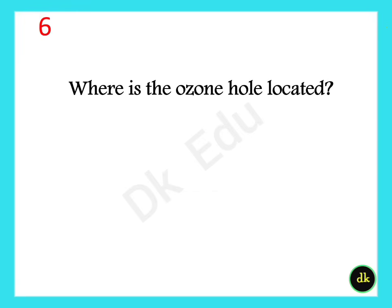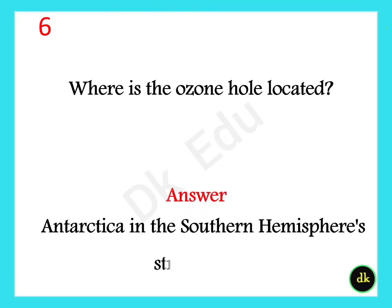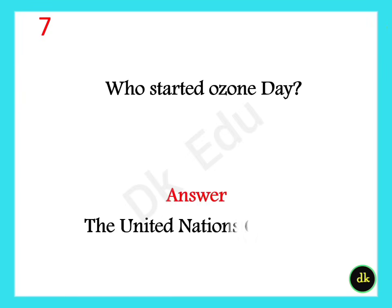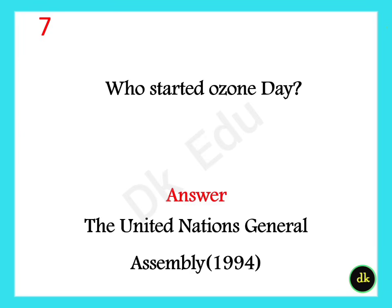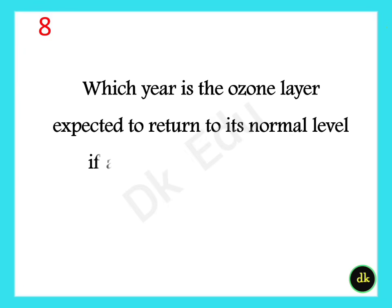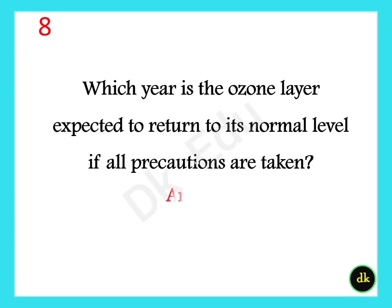Where is the ozone hole located? It is located in Antarctica, in the Southern Hemisphere's stratosphere. Who started Ozone Day? The United Nations General Assembly in 1994. Which year is the ozone layer expected to return to its normal level if all precautions are taken? Answer: 2050.